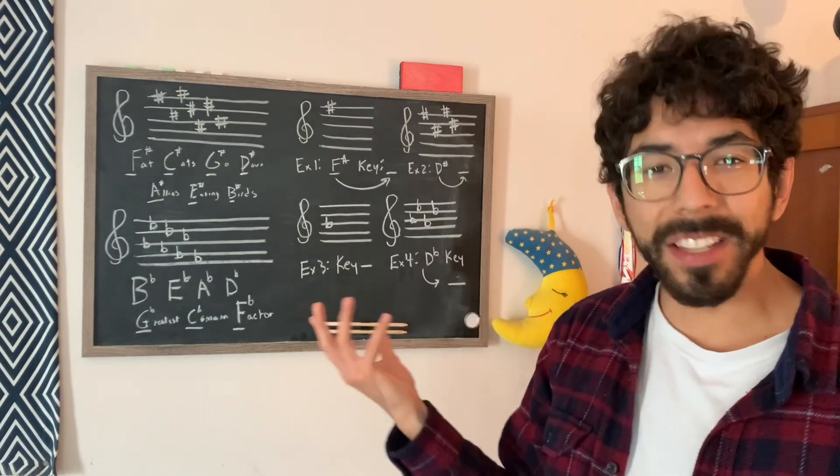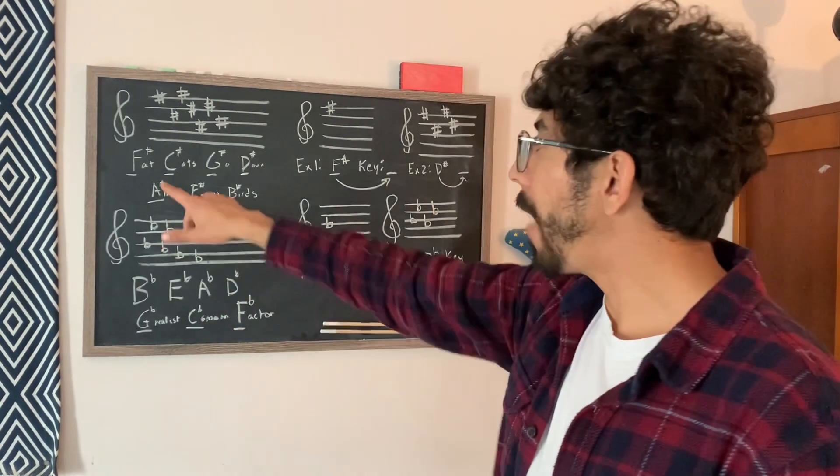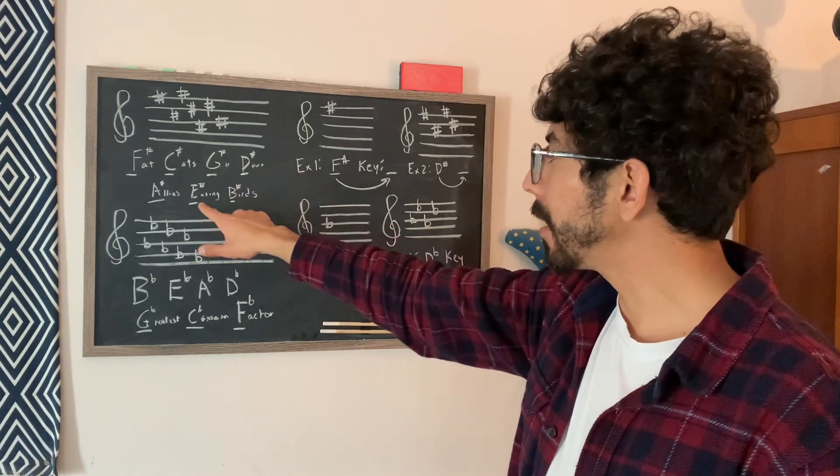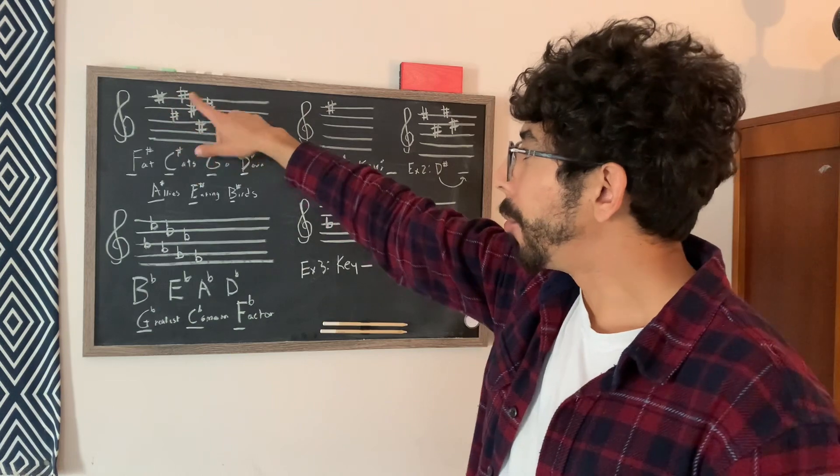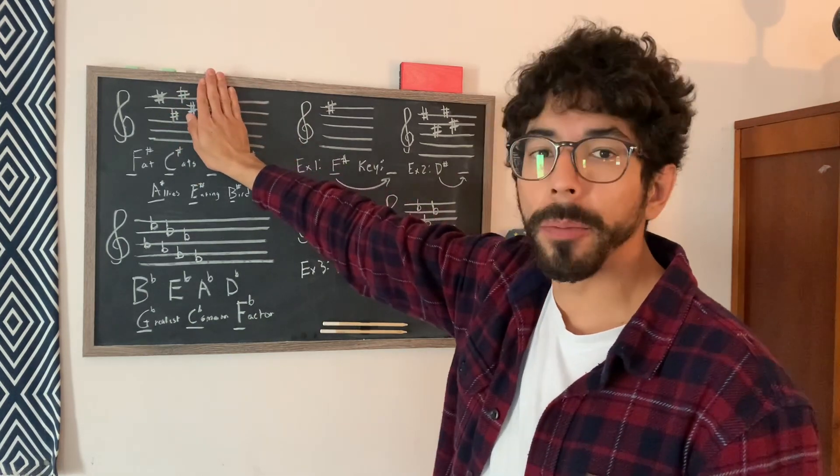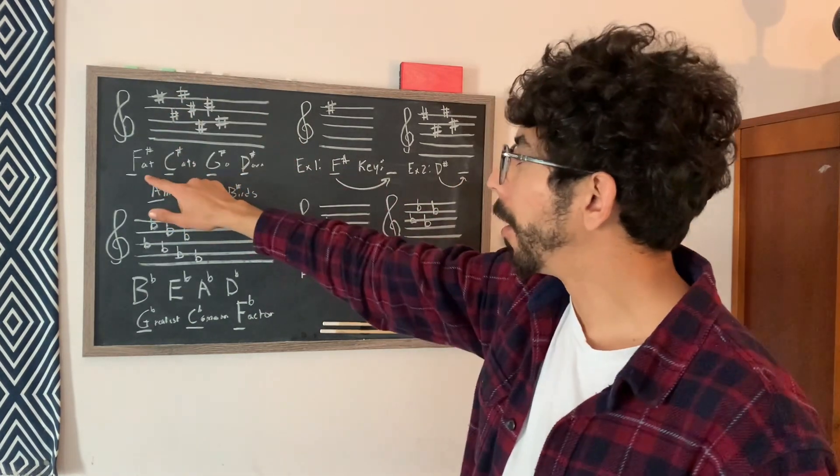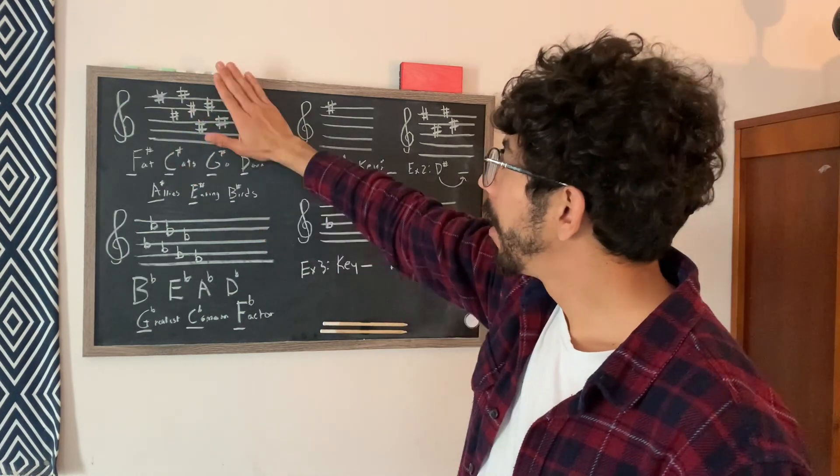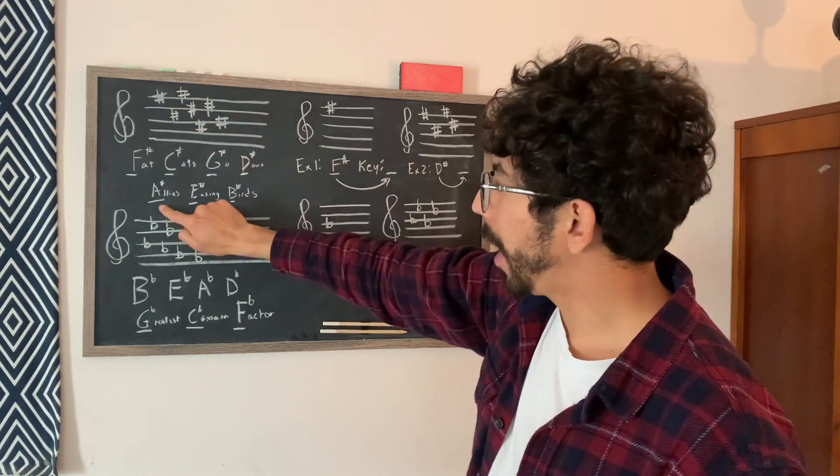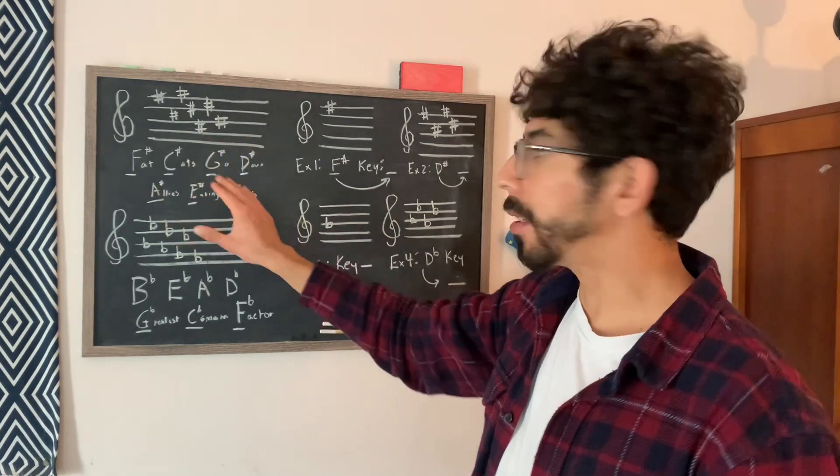So an easy way to memorize that is fat cats go down alleys eating birds. So if you see, say, four sharps, it's always going to be in the same order. It's going to be the first four, F, C-sharp, G-sharp, and D-sharp. Say if you add a fifth, then it's going to be A-sharp. And it always sticks to this order.